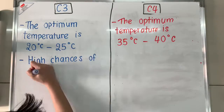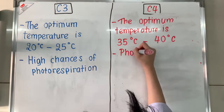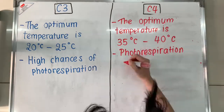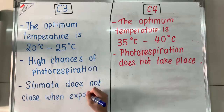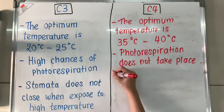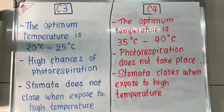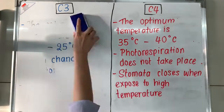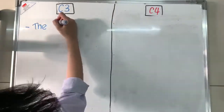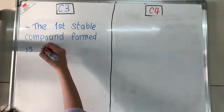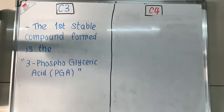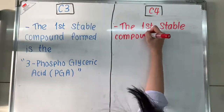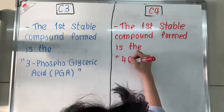There is a higher chance of photorespiration in C3 plants, while in C4 plants, photorespiration does not happen at all. The C3 plant stomata remain open even when exposed to high temperature, while C4 stomata close to prevent dehydration. In C3 plants, the first stable compound is 3-phosphoglyceric acid. Meanwhile, in C4 plants, the first stable compound is the 4-carbon molecule called oxaloacetate.